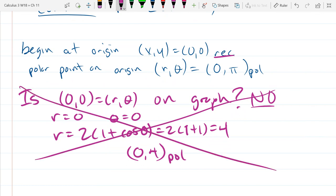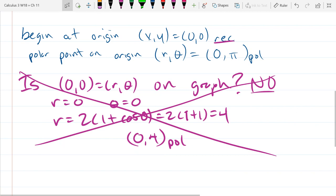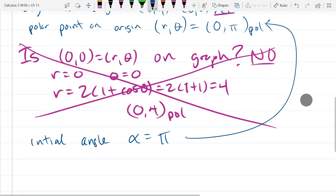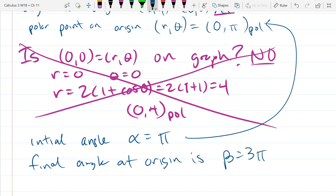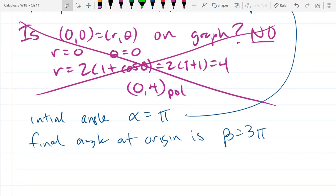So the (0,0) in rectangular would be on the graph. But in polar coordinates, that would correspond to (0,π). So that's tricky because your angle at the origin could be anything. In this example, the angle at the origin we said was odd multiples of π. All right. So let's ignore all this right here. It's important to pay attention to. All right. So we're going to go from the origin back to the origin. So you can choose which way we go. We can either go positive or negative. Let's go positive.